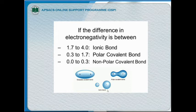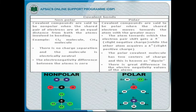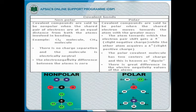The diagrams show three cases: the first diagram is non-polar, the second is polar, and the third is ionic bonding. Non-polar covalent compounds are those where the shared pair of electrons are at an equal distance from both atoms involved in the bonding — for example, Cl₂ and CH₄. There is no charge separation and the molecule is electrically neutral, with an electronegativity difference of 0 between the atoms.